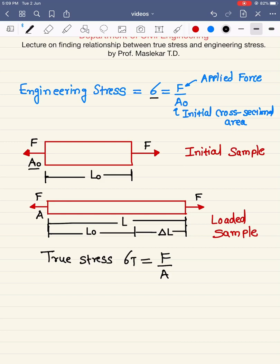By observing the diagram, we can say that when tensile forces act on a member or a bar, the elongation of the bar takes place, the length changes, and the cross-sectional area A gets reduced. A0 is the initial area and A is the reduced area.